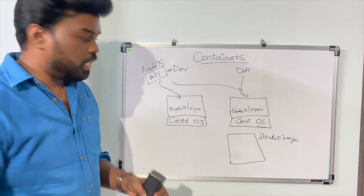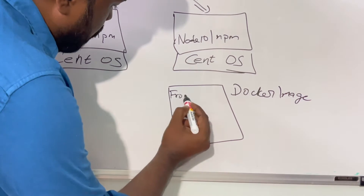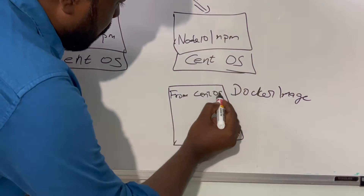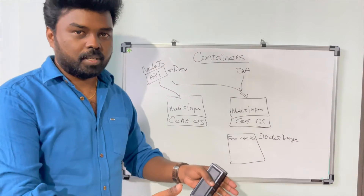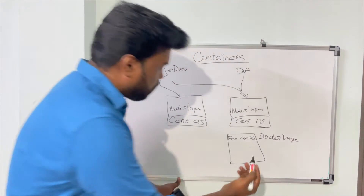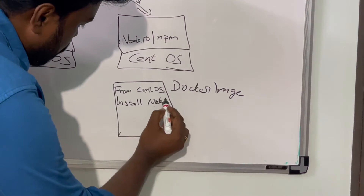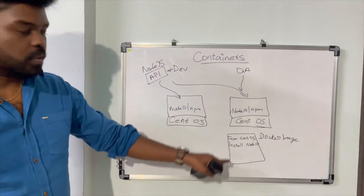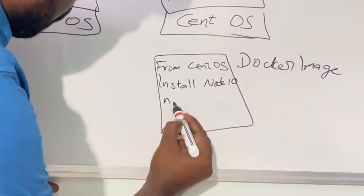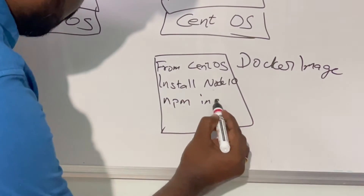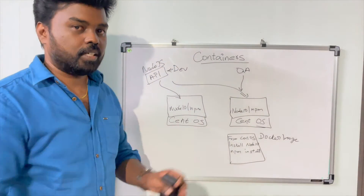You create a Docker image and declare and define everything that is necessary for your application to run. In our case, we first need an operating system — CentOS — so you specify that in the Docker image. Then we need some tools and binaries, so we install the Node runtime inside the Docker image. Once the runtime is installed, we also install all the application dependencies. Now your Docker image has everything necessary to run the application.